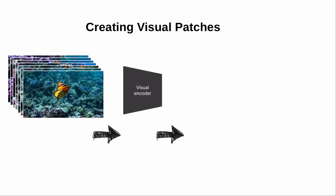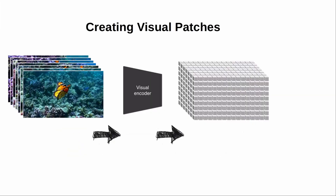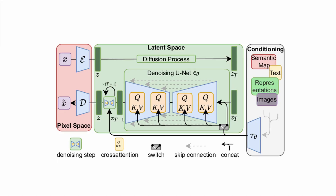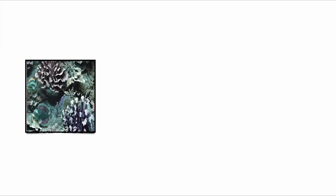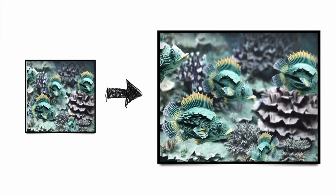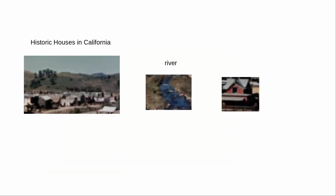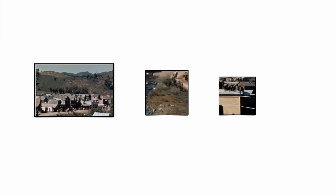To do this, Sora first compresses the videos into latent spaces. Think of latent spaces as the data with the underlying structure and variation of that video, and then decomposes these latent spaces into patches. A decoder maps these latent spaces back to the pixel space, and the model then takes control of the final size of the generated video.